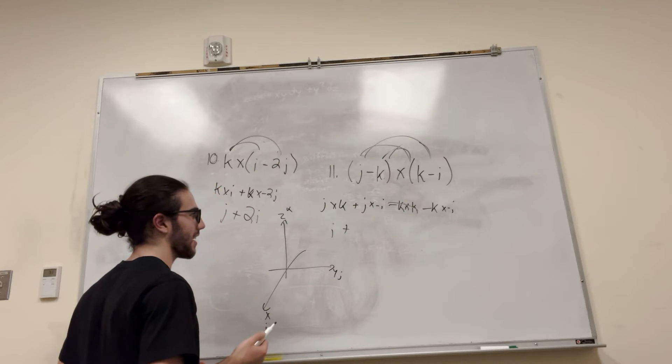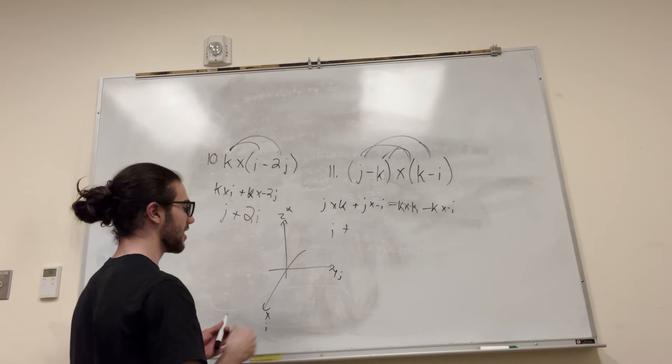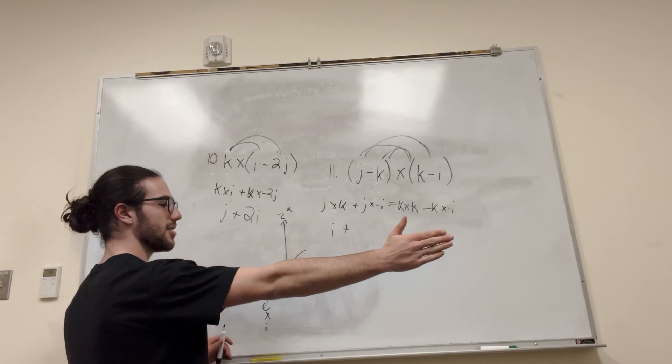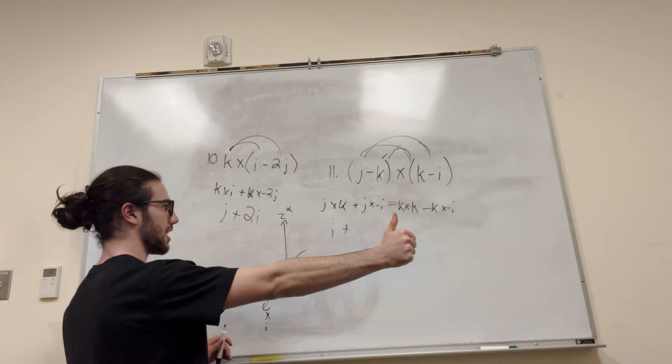So j cross negative i. So we have j, it's going this way, but negative i. So let's do this right-hand rule, putting a j, curling to negative i. That means that it's going to be k.